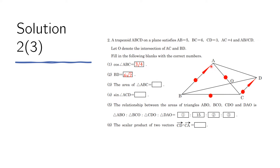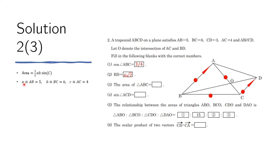Now we need to find the area of triangle ABC. Because we have three sides, we could use Heron's formula, but instead I prefer to use the formula: area equals one-half times side times side times the sine of the included angle, since we already know the cosine of that angle. Let A be AB, which is 5.